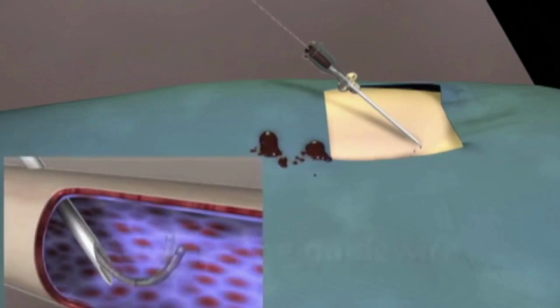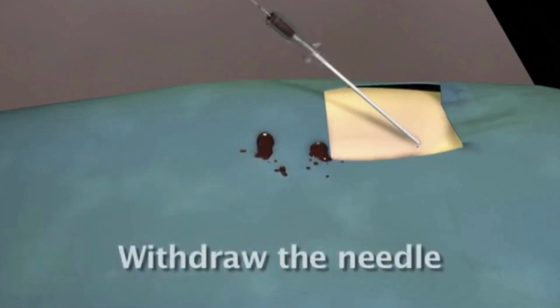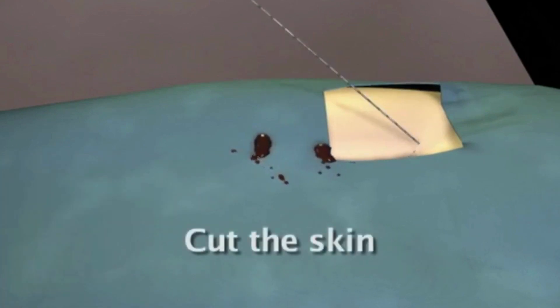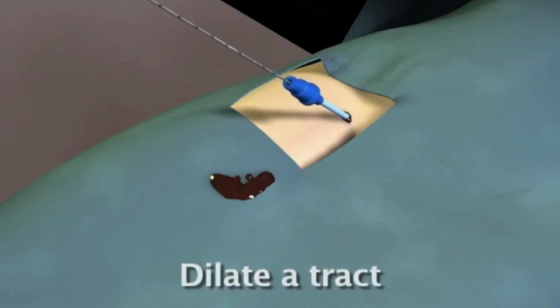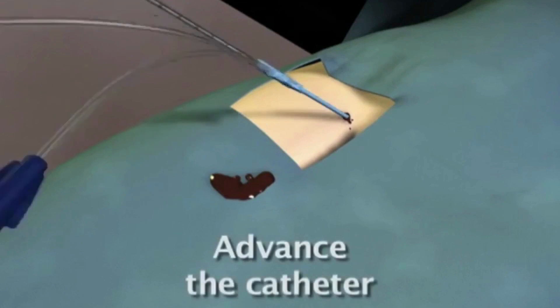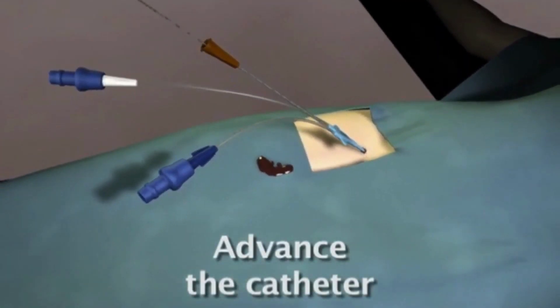Second, advance the guide wire into the vessel lumen. Third, withdraw the needle and use a scalpel to cut the skin adjacent to the wire. Fourth, dilate a tract from the level of the skin into the vessel lumen. Fifth, advance the catheter over the guide wire into the vessel while maintaining control of the guide wire at all times.